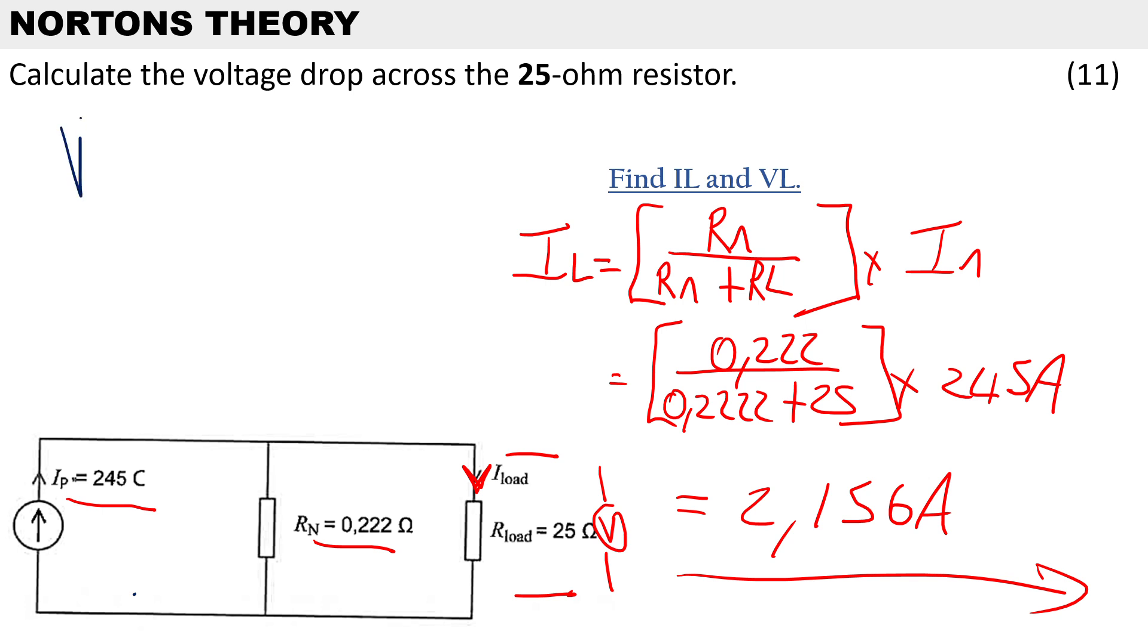To calculate the volt drop it'll be IL times RL. So we substitute the line current of 2.156 multiplied by the load resistor of 25, and that gives us our voltage across the load resistor which is 53.9 volts. All right, thanks very much - this is our last video for Norton's theorem.